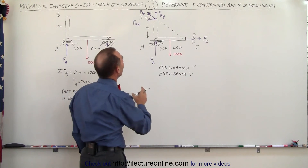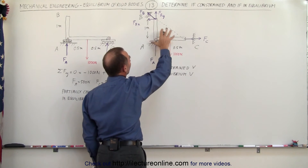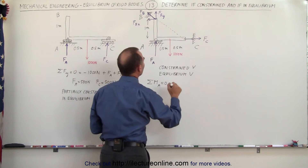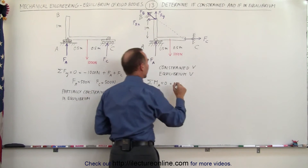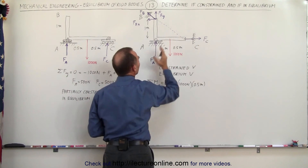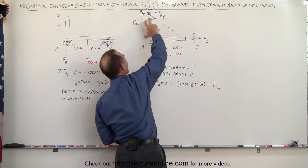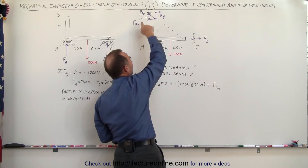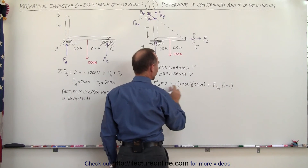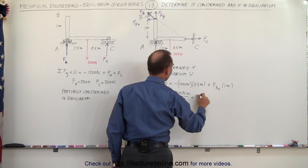How do we determine the forces? We calculate F_Bx because it must compensate for the moment. The sum of moments at A must equal zero: minus a thousand Newtons times 0.5 meters (the moment arm from the point of rotation to the line of action) plus F_Bx times one meter equals zero, because F_Bx causes a counterclockwise positive moment. So F_Bx equals positive 500 Newton-meters divided by one meter, which equals positive 500 Newtons.